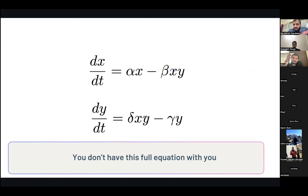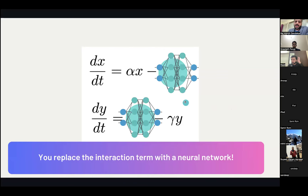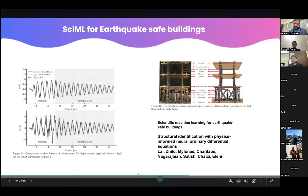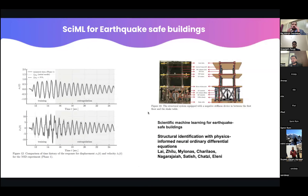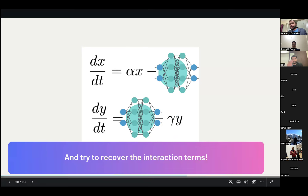That is all which is done in scientific machine learning. The concept is very simple and can be applied to so many different fields. You first identify the parts of the ODE or PDE that are missing, replace those missing parts with a neural network, and then optimize the neural network. This is exactly what is done in so many scientific ML research problems. If you understand this main philosophy, you will really understand how to build your own problem.